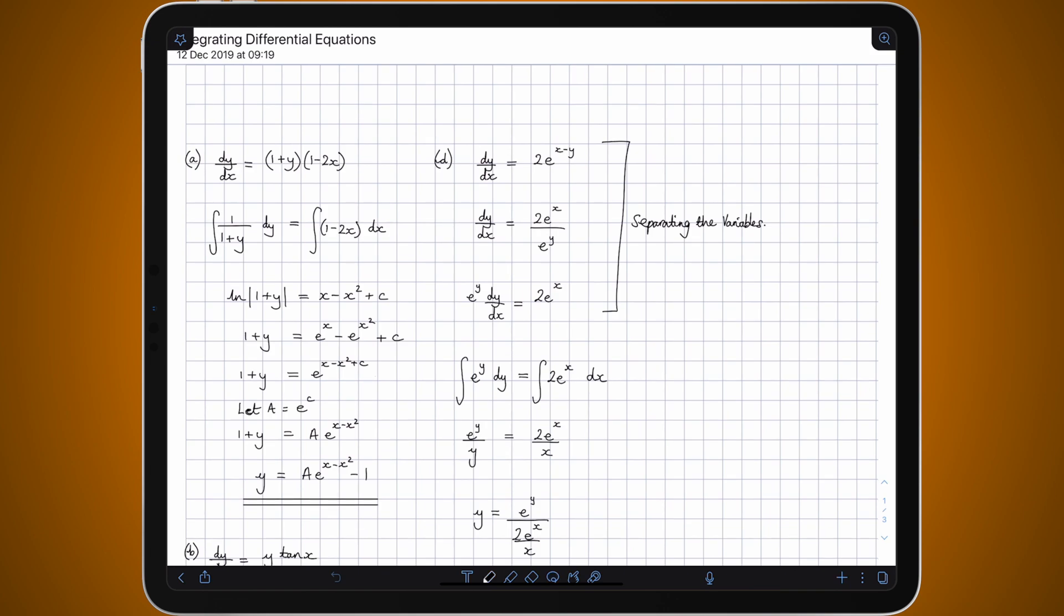So to group pen strokes together all you have to do is go to the selection tool at the bottom and then just select the strokes that you want to group together. For example I've got a load of pen strokes here that I want to group together.